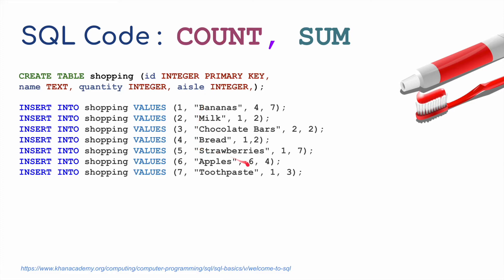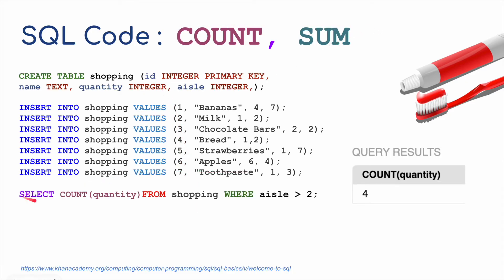We've now got seven items in the database — I've added apples and toothpaste — so I'm going to use COUNT and SUM. First: SELECT COUNT(quantity) FROM shopping WHERE aisle is greater than two. Bananas are on aisle seven, strawberries on aisle seven, apples on aisle four, and toothpaste on aisle three. Bread and milk are on aisle two, which is not greater than two, so those are excluded. That gives our count result.